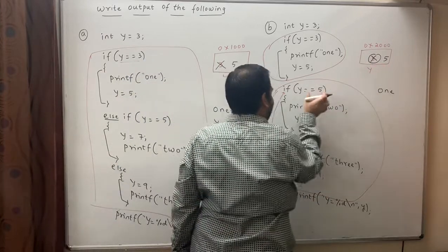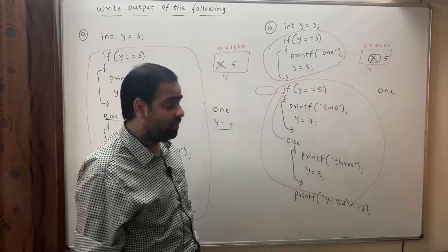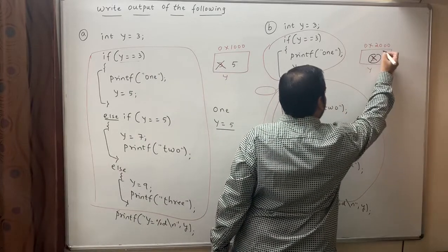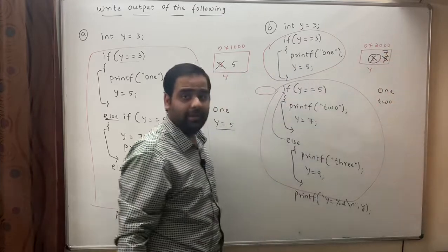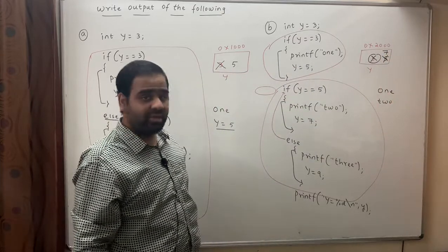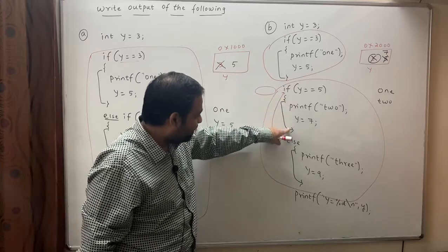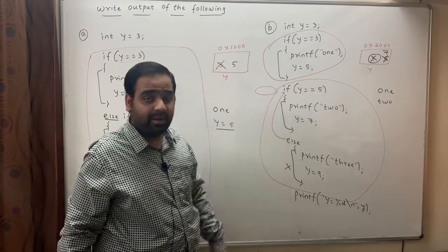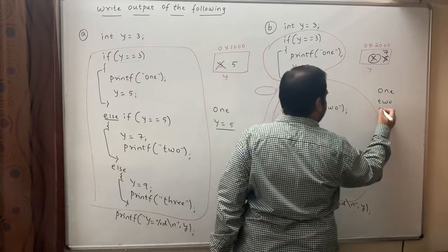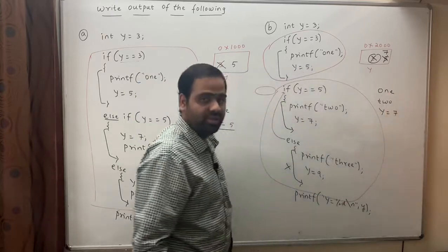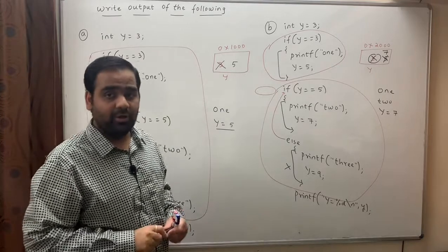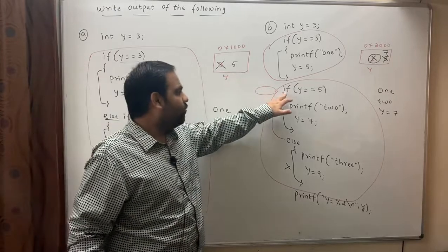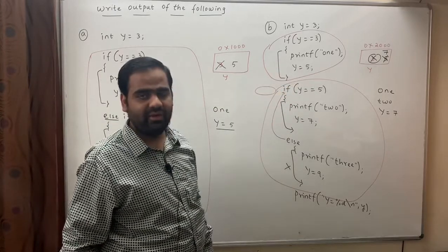The value of y is 3. 3 == 3? Yes. It will print 1 and the value of y changes from 3 to 5. Now this if is done. This is a separate if-else, and in this case we have written else-if, so this complete thing becomes an else-if ladder. The value of y is now 5. 5 == 5? Yes. It will print 2 as well and the value of y changes from 5 to 7. Since this if has executed, the else block should not execute, and it prints the value of y, which is 7.